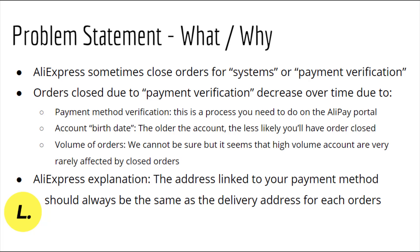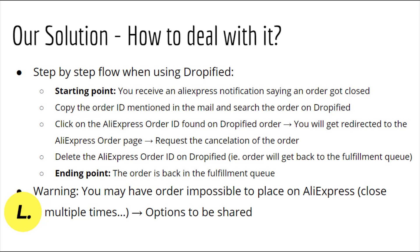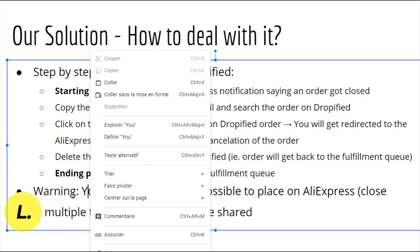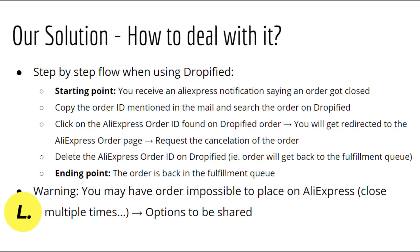The main issue you may face is in the warning section: sometimes orders are repeatedly closed. For example, you want to ship an order to Monica in California — it gets closed, you replace it again via Dropify on AliExpress, but it's closed again. That becomes a real issue because you clearly don't know how to deliver the product. I'll share some options later in the video.